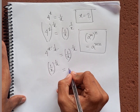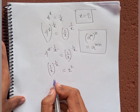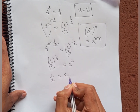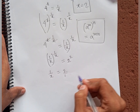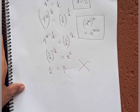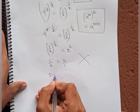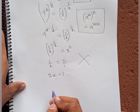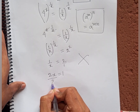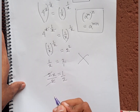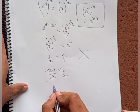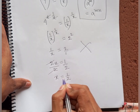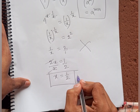Since 4 = 2^2, we can write (1/x)^(1/x) = 2^2. Comparing, 1/x = 2, which is the same as 2/1. Cross-multiplying: 2x = 1. Dividing both sides by 2, x = 1/2. This is our final answer.